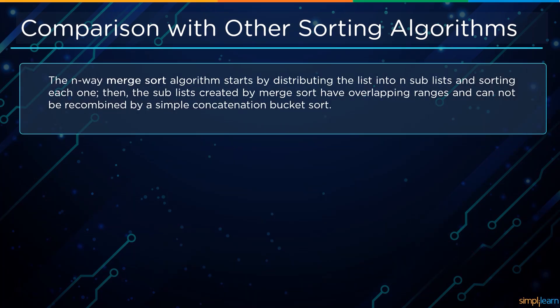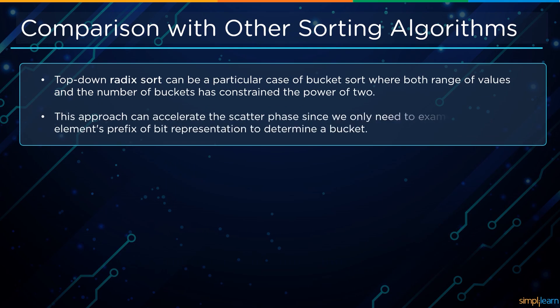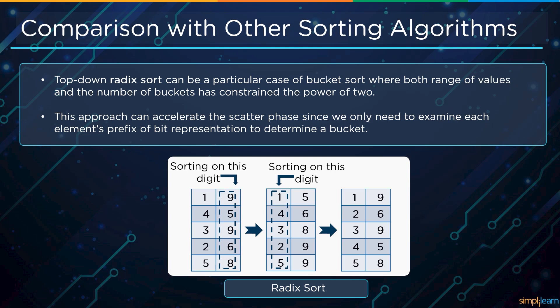Compared to merge sort, the n-way merge sort algorithm starts by distributing the list into n sublists and sorting each one. However, sublists created by merge sort have overlapping ranges and cannot be recombined by a simple concatenation like bucket sort can. Compared to radix sort, top-down radix sort can be a particular case of bucket sort where both the range of values and the number of buckets are a power of two — this accelerates the scatter phase by examining only each element's bit-prefix to determine its bucket.